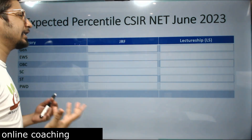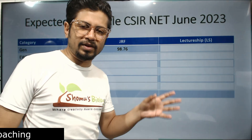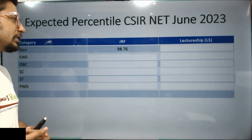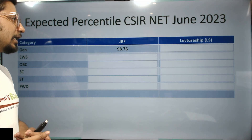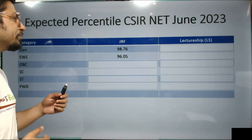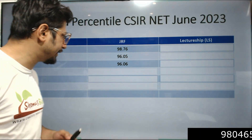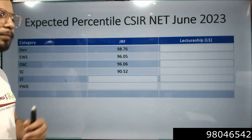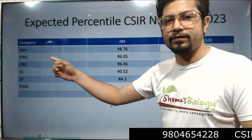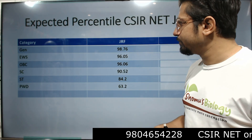For GRF, 98.76 percentile is the prediction this time and is approximately the cutoff going forward. For EWS category, 96.05 percentile. For OBC category, 96.06 percentile. For SC category, 90.52 percentile. For ST category, 84.20 percentile. And for PWD category, 63.20 percentile.